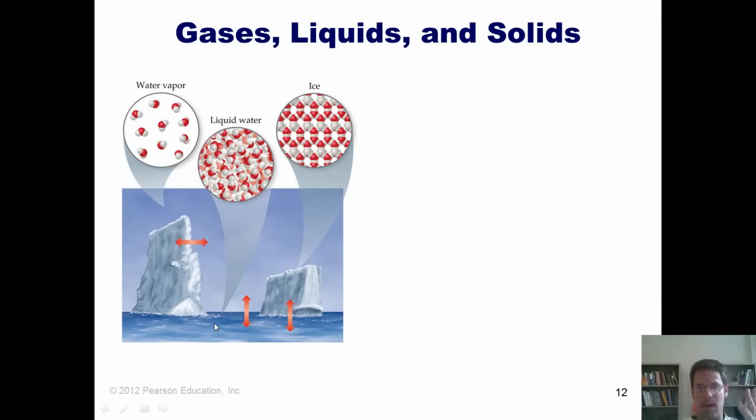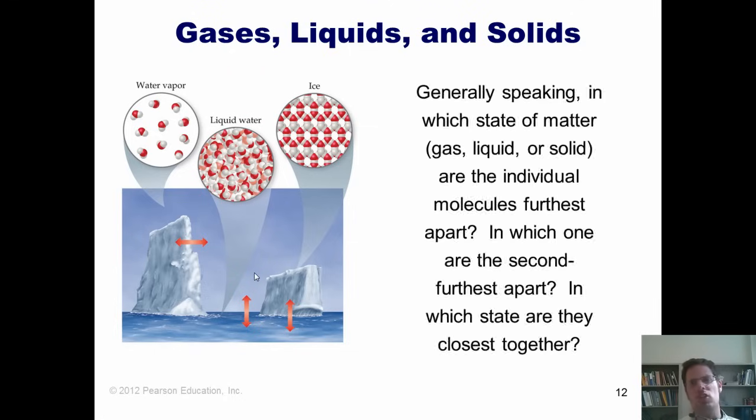So I ask you, generally speaking, in which state of matter—gas, liquid, or solid—are the individual molecules furthest apart? In which state do you think they are second furthest apart? And in which state do you think they're closest together—gas, liquid, or solid? I'm not going to answer the question, but I want you to think about it.